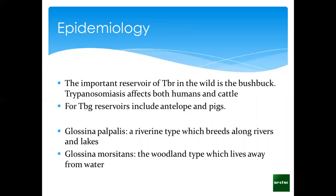Glossina mossitans is found in the woodland types and lives away from water. If you think about it, most rivers are found in Central and West Africa, so we expect Glossina palpalis to be more prevalent in the Western and Central regions of Africa. Glossina mossitans, because of the woodland habitat, is mostly in Eastern and Southern Africa — those are the woodland areas.